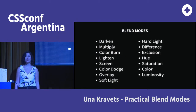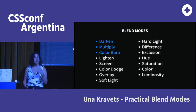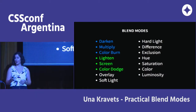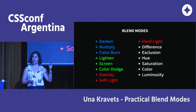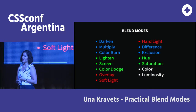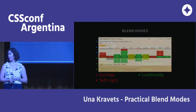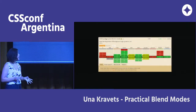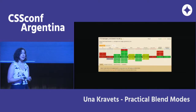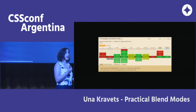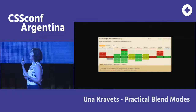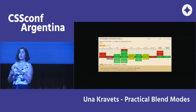Here are all the blend mode options. They come in groups: darken, multiply, and color burn all make images darker. Then there's the lighten group: lighten, screen, and color dodge. There's overlay, soft light, and hard light. Then difference and exclusion, which are similar. The last four are color properties: hue, saturation, color, and luminosity. There are two ways to apply them: background-blend-mode applies to an element with multiple backgrounds, while mix-blend-mode mixes the element with the surrounding page.